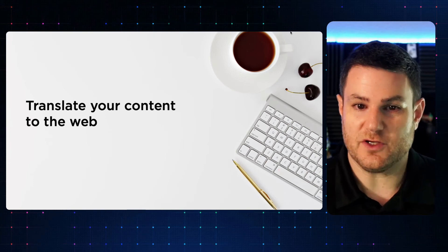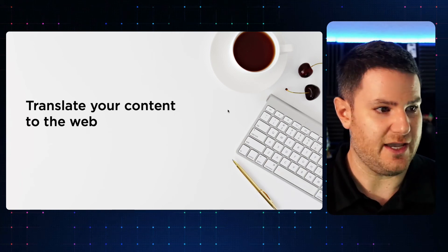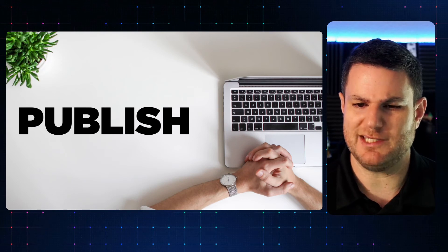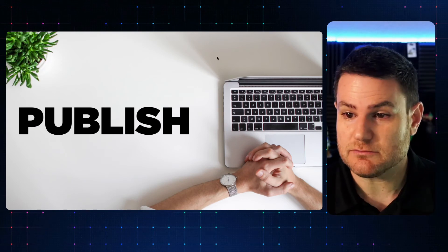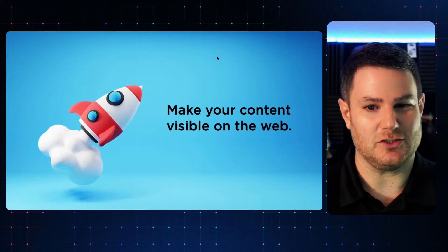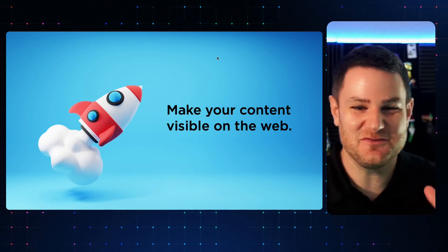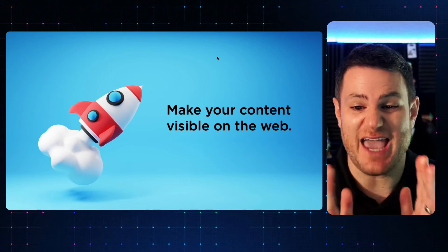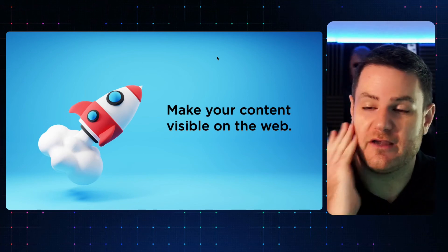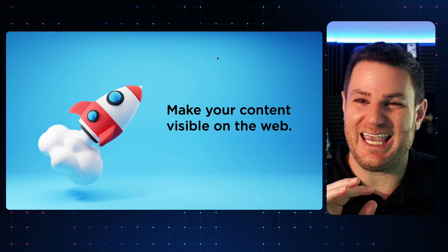So we've talked about Plan, we've talked about Produce. The third step is Publish. Now this is perhaps the simplest of the four Ps, but it is important because you do need to actually publish your content and get it out there on the web. Now you might find it hard to believe, but I've actually forgotten this step before. And then like a week later, I'm like, oh my God, I forgot to publish that blog post or make that video public.